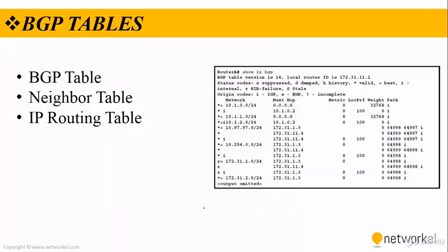Let's take a look at the tables used in BGP. We have the BGP table, the neighbor table, and the IP routing table. The neighbor table consists of all BGP configured neighbors — and keep in mind that neighbors are configured manually in BGP. The BGP table contains all BGP routes and can sometimes be very large. The routing table contains the best paths for destination networks, as with other protocols.